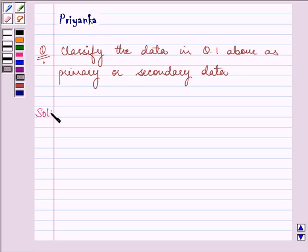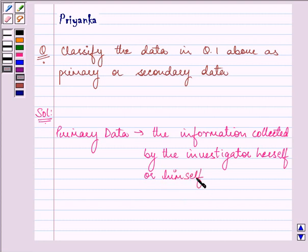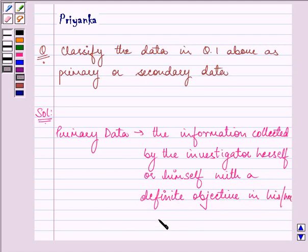So let us read firstly and understand what primary data is all about. Primary data is the information collected by the investigator herself or himself with a definite objective in his or her mind.